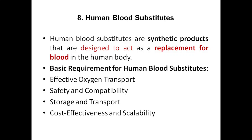The second requirement is safety and compatibility. Our blood is safe and our body is compatible with it. If you are going to synthesize a blood substitute in the laboratory, we need to make sure that it is safe and compatible with all living cells, tissues, and organs inside the body. Next, storage and transport — it should be able to store and transport oxygen. Next, cost effectiveness and scalability — it should not be too costly, and large-scale production should be possible.